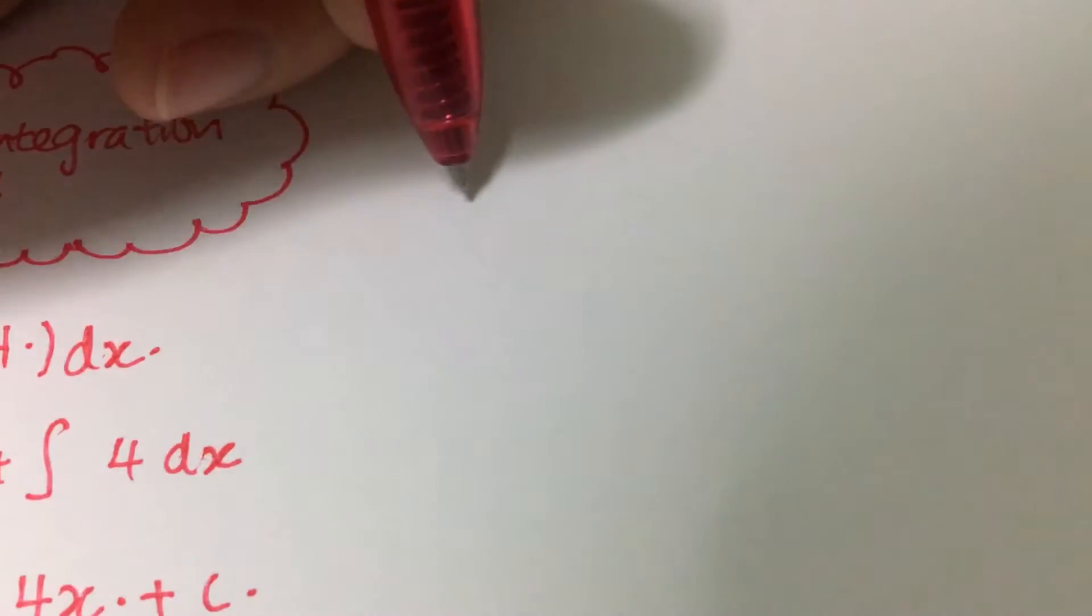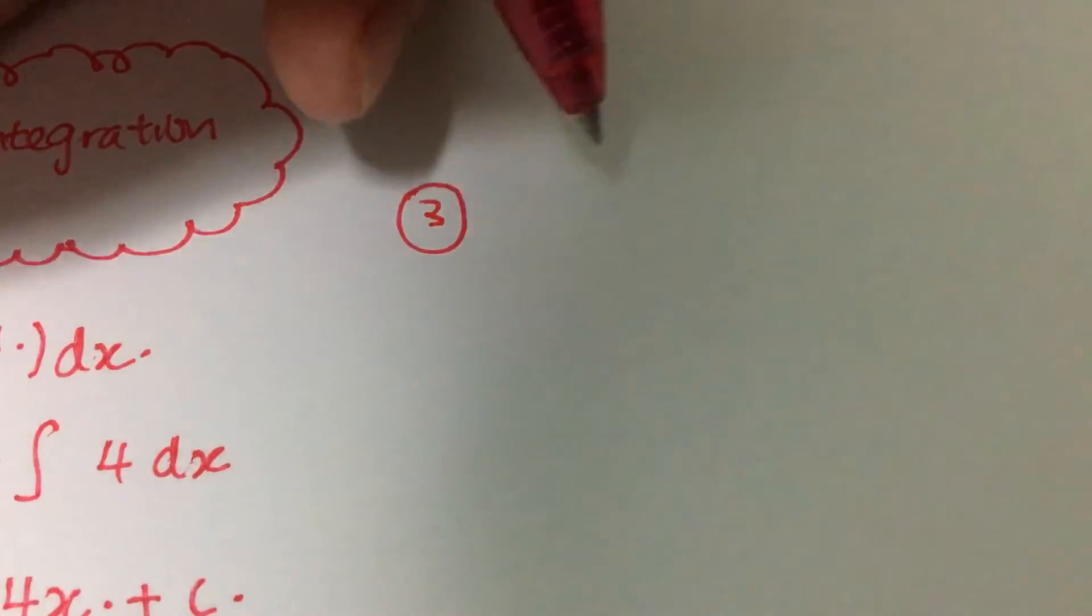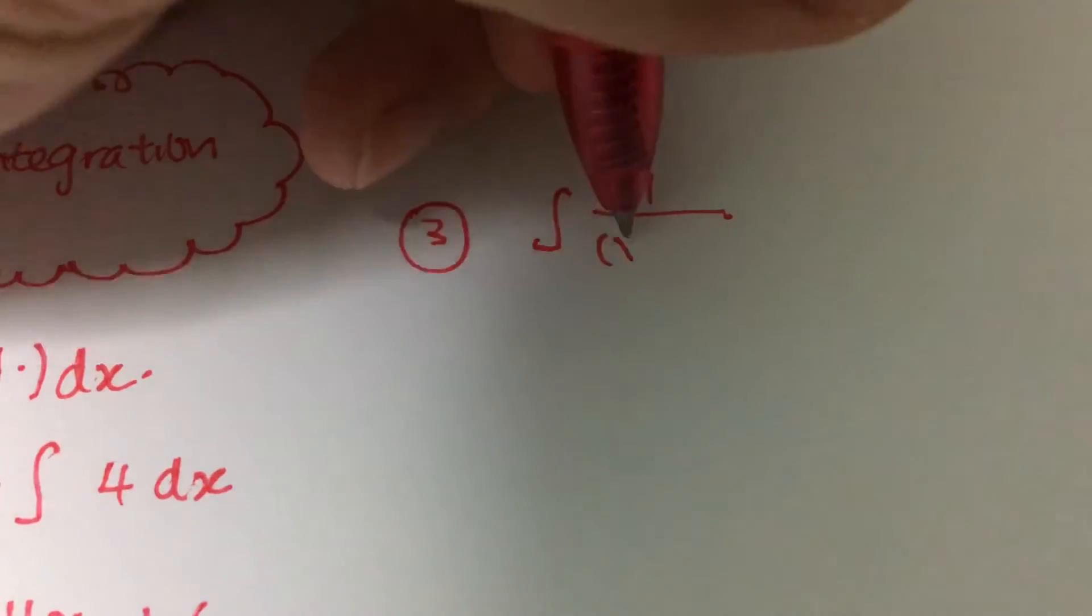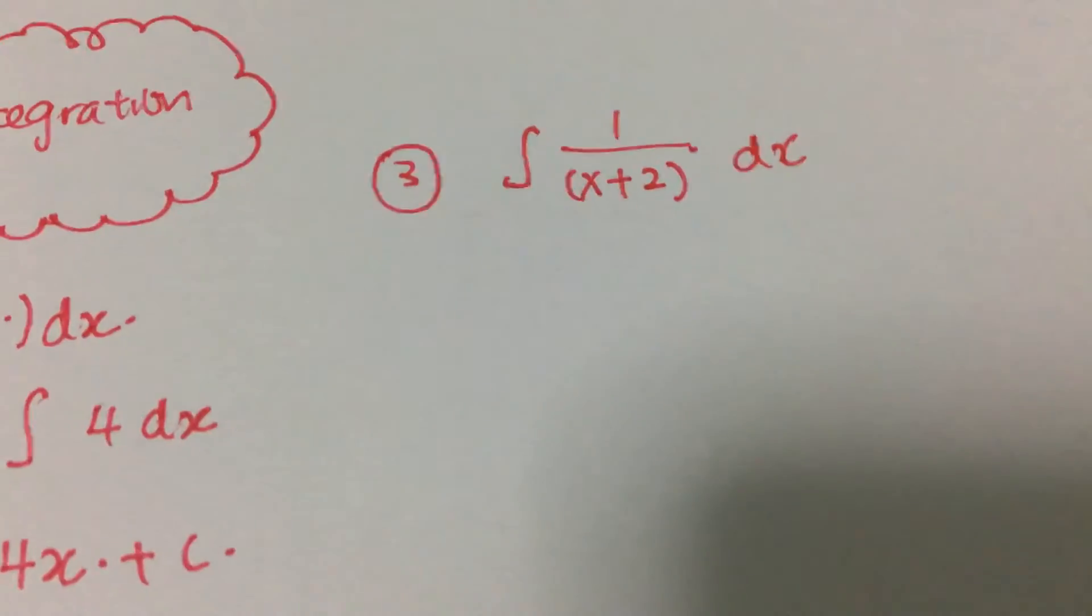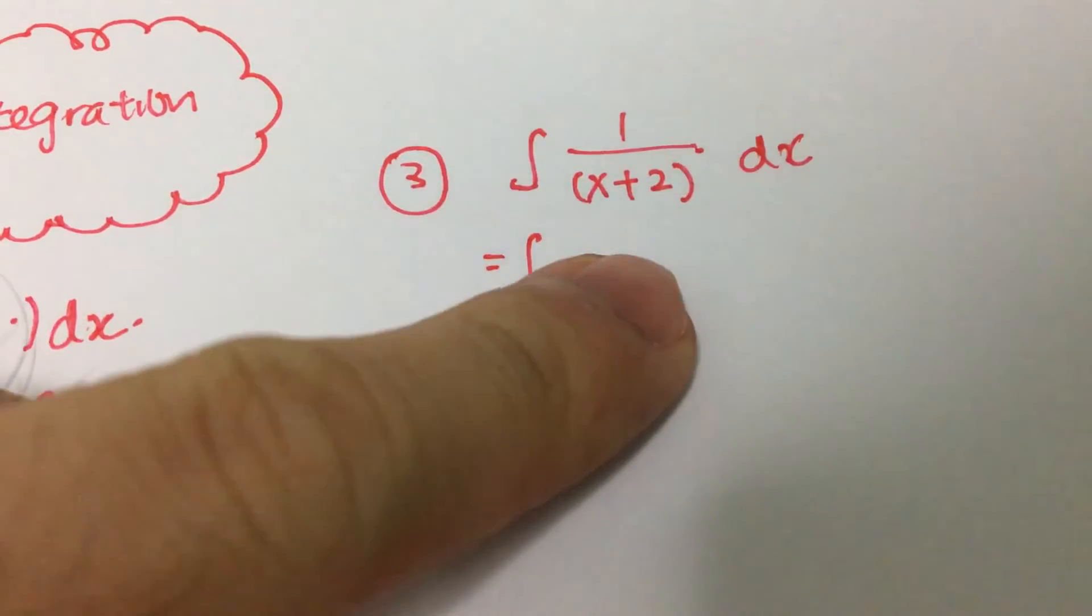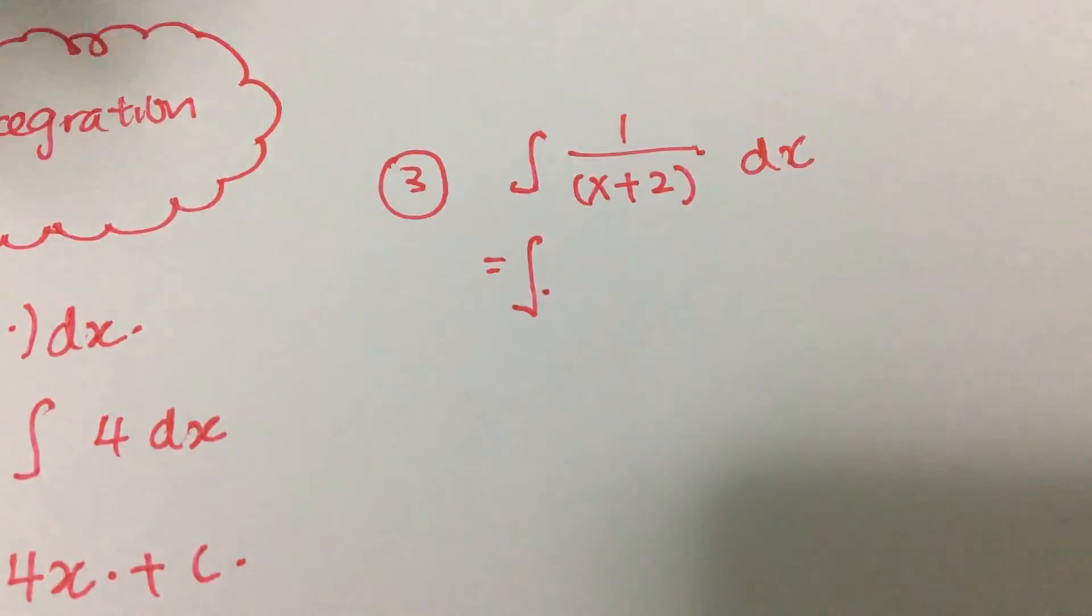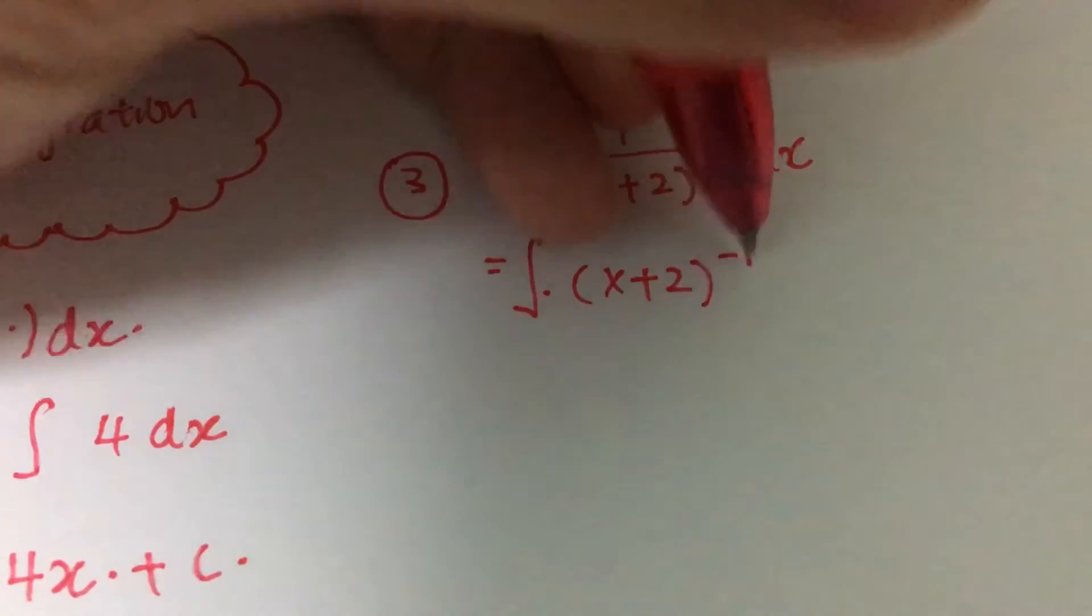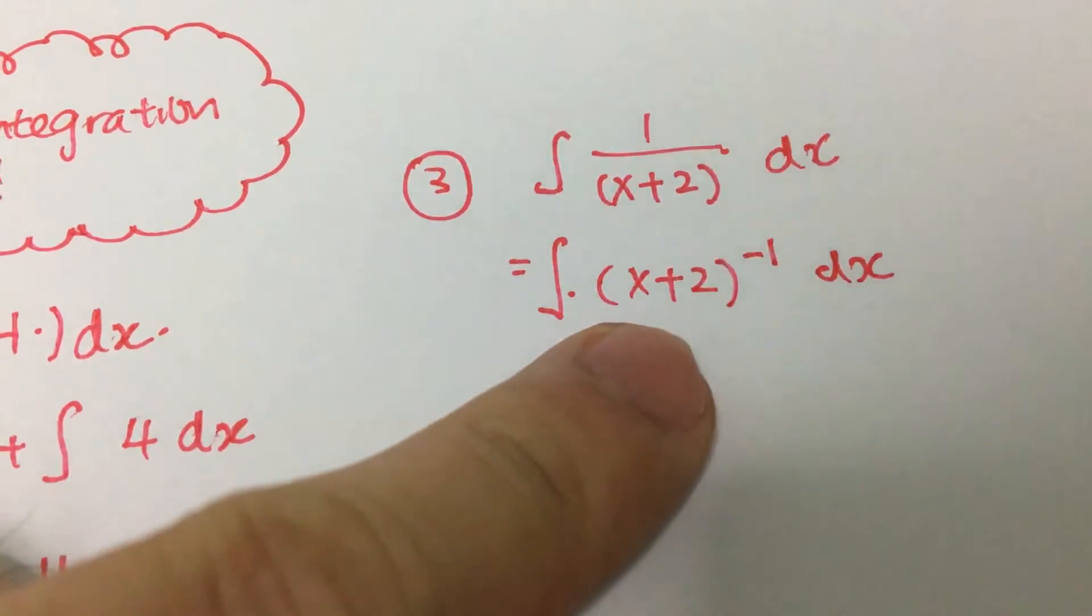One more example for this integration. If you were to deal with this, first thing first, I would convert it into an index form. In this case, it is x plus 2 to the power of negative 1 dx.